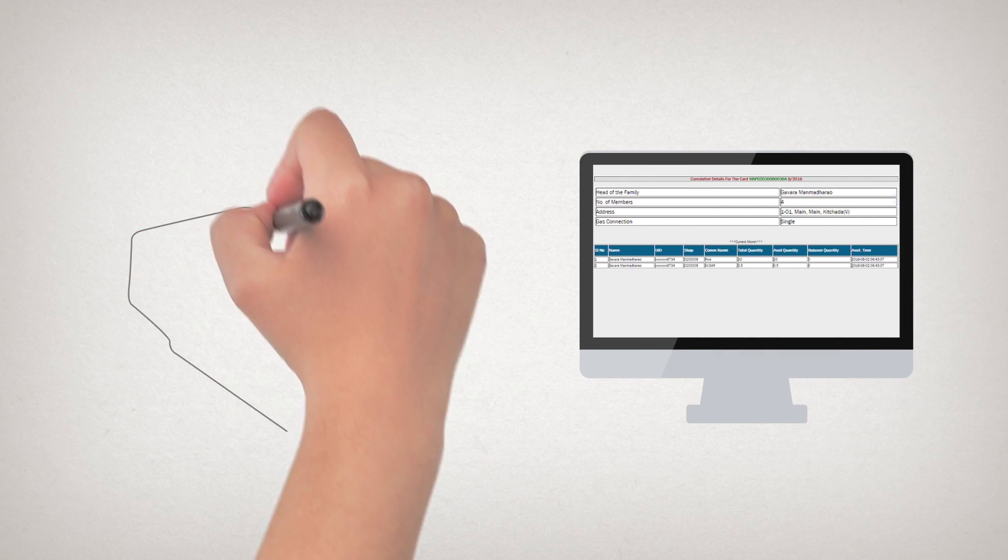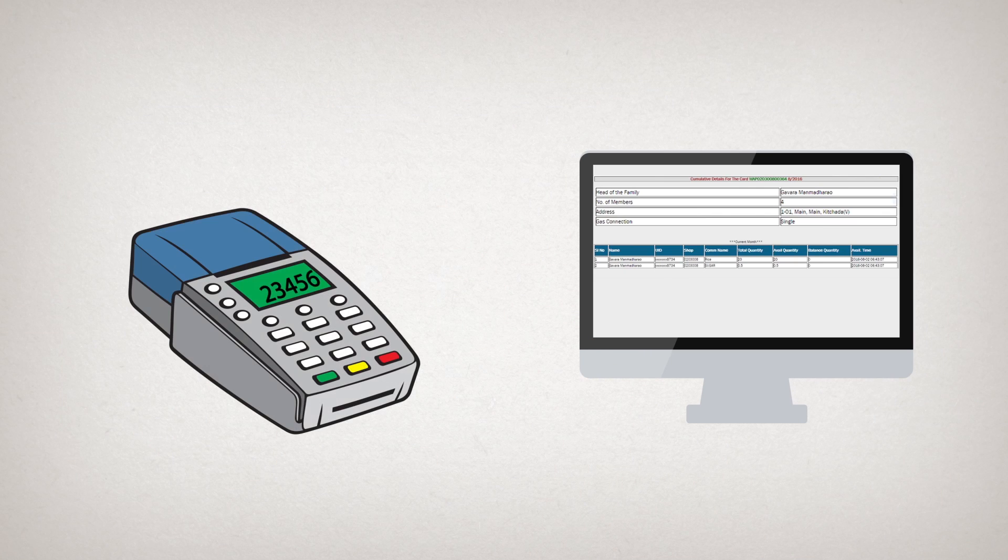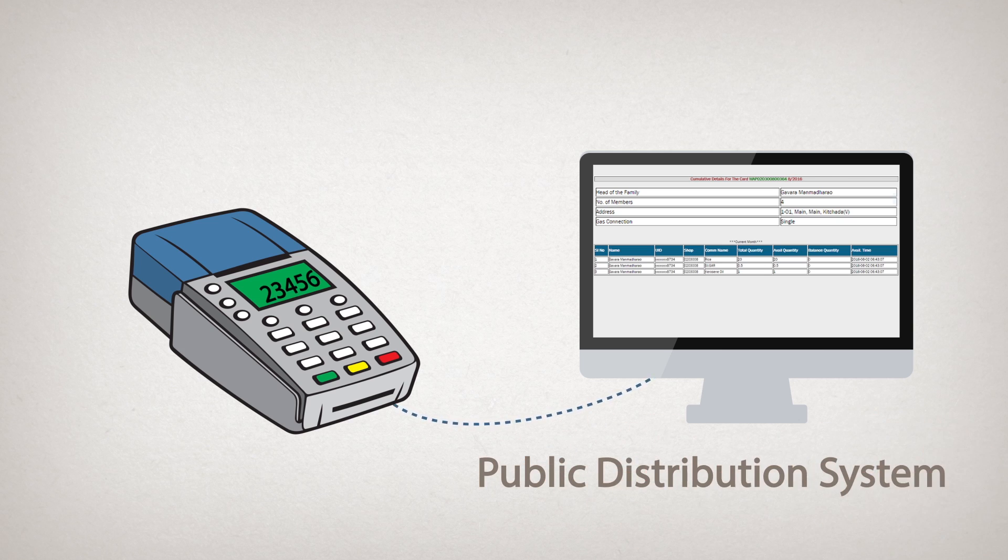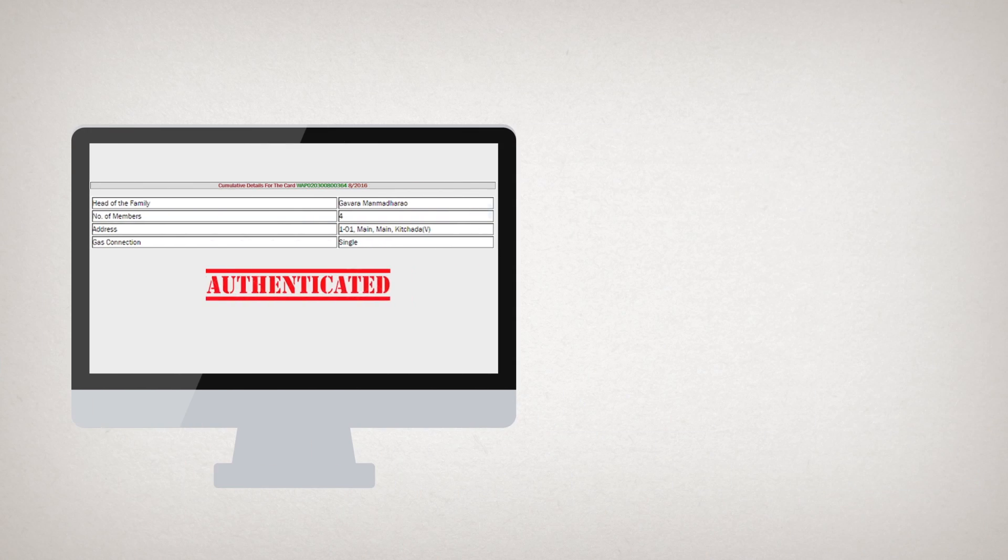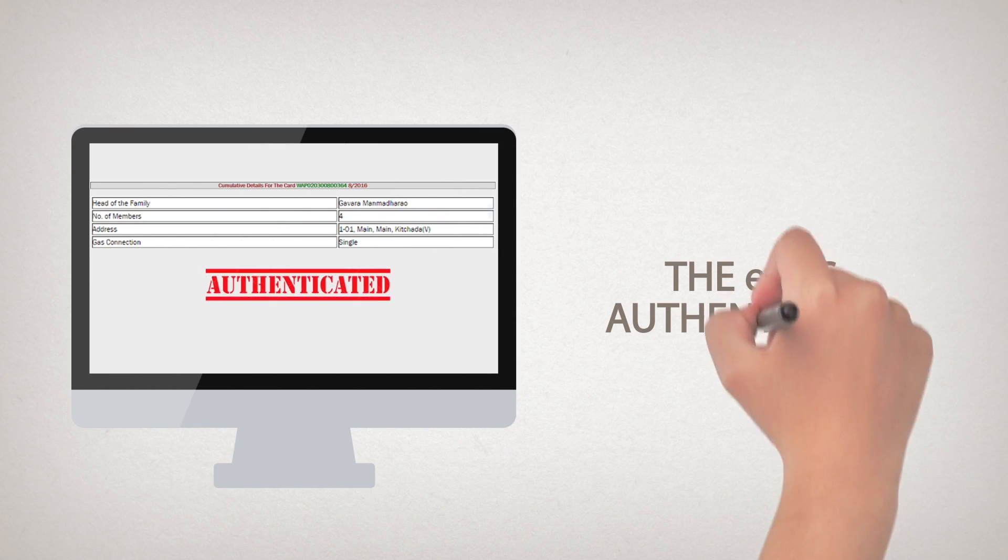In order to make a purchase, the beneficiary enters the ration card number into the EPOS machine, which is linked to the EPDS, the public distribution system. The EPDS authenticates the ration card number.